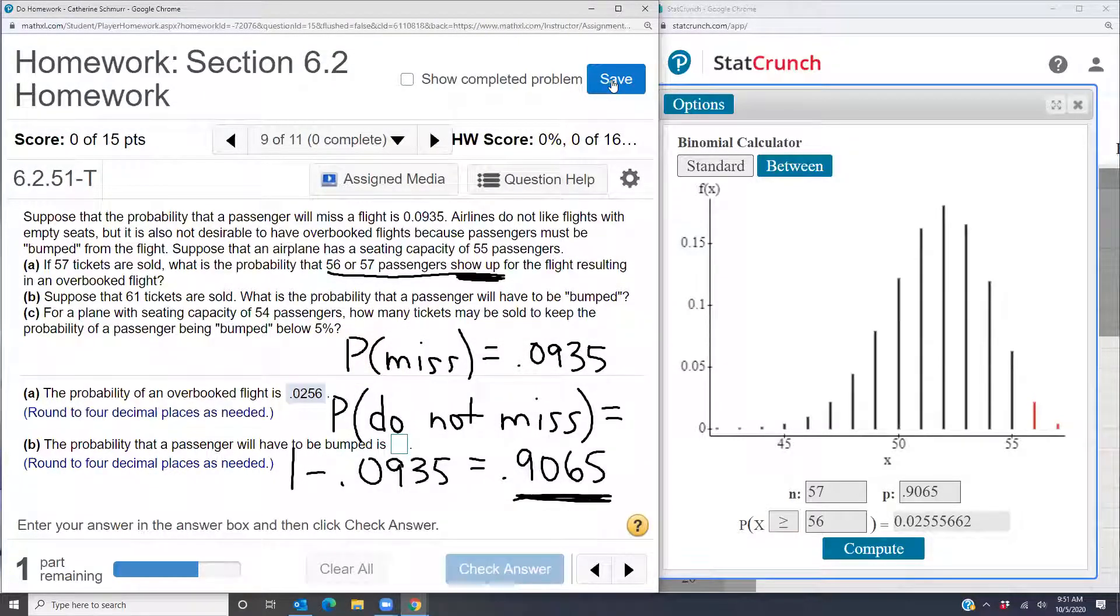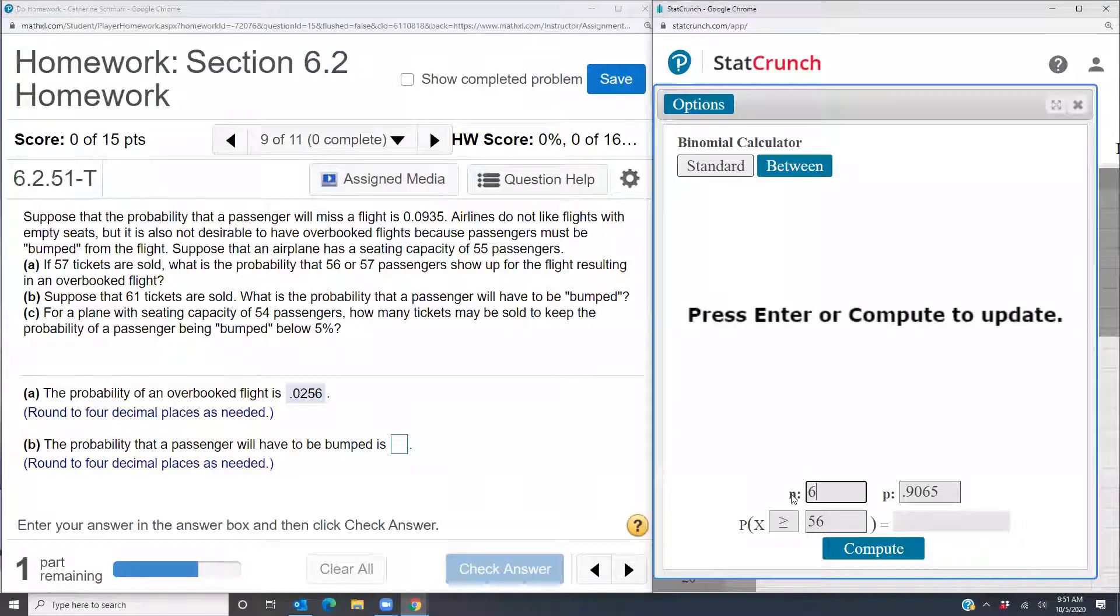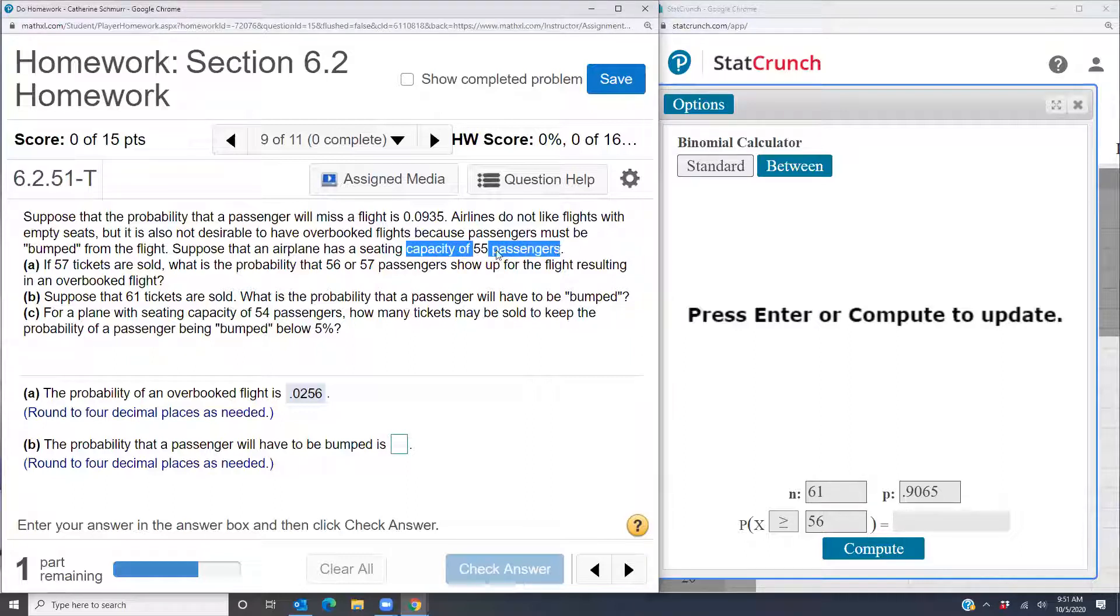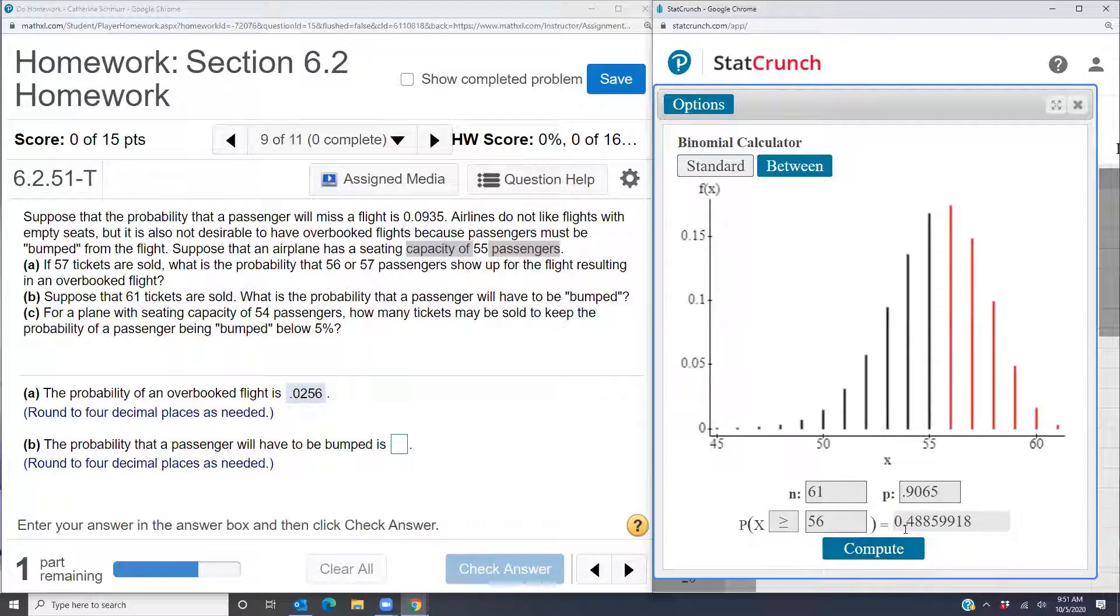Okay, so now on to part B. We want the probability that a passenger will have to be bumped if 61 tickets are sold. So I'm going to change my n to 61. That's how many tickets are sold. What is the probability that a passenger will have to be bumped? So we are assuming that there are still only 55 seats on the plane. So a capacity of 55 passengers. So we still want x to be greater than or equal to 56. And the probability that a passenger shows up has not changed. So the only thing I'm changing here is the n, how many tickets are sold. So I compute that and I get .4886 because I round that five up since the digit after is five or greater.